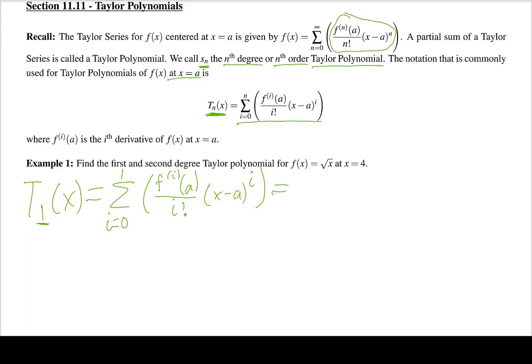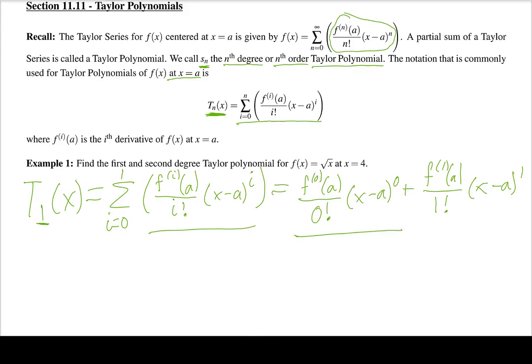Expanding this sum: the i=0 term gives f^(0)(a) over 0! times (x−a)^0, and the i=1 term gives f'(a) over 1! times (x−a)^1. I started at i=0, plugged in 0 for all i's to get the first term, then plugged in 1 to get the second term, and since n=1 that's where I stop.